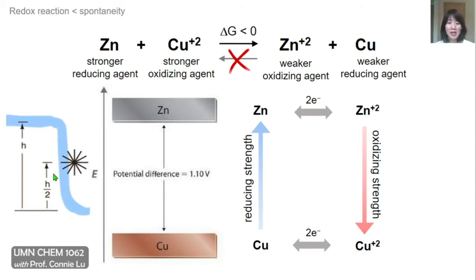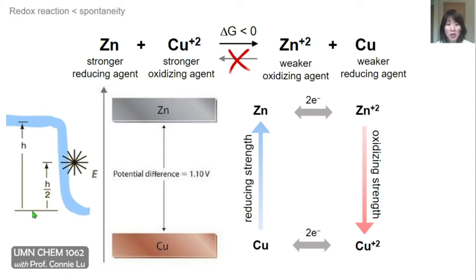The flow of electrons is often compared to the flow of water. Here's a cartoon of a waterfall with a specific height h, and waterfalls can do work on their surroundings. We can add a water wheel to convert potential energy into mechanical energy. If the water wheel was originally at the bottom of the waterfall, we would extract the maximum amount of work because of the larger potential energy. However, if we were to move the water wheel halfway up, our potential energy would be halved and therefore the amount of work would also approximately be halved.